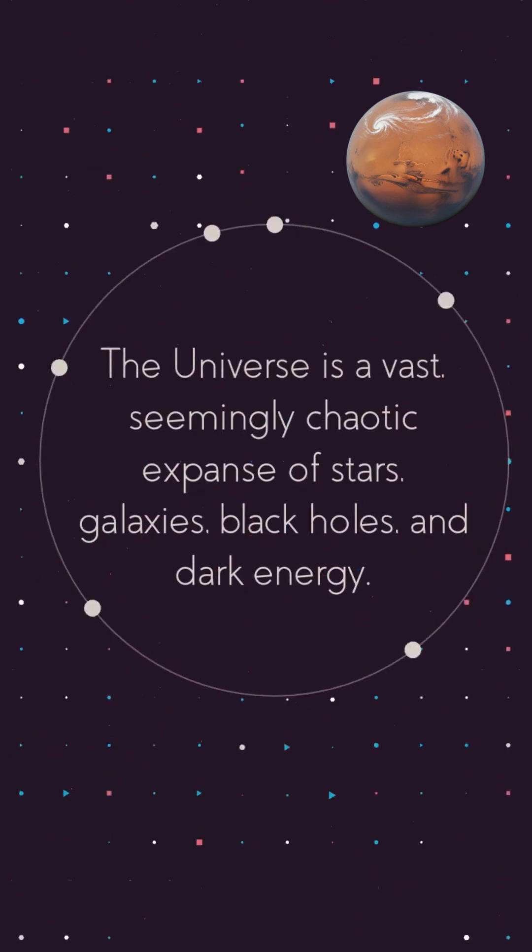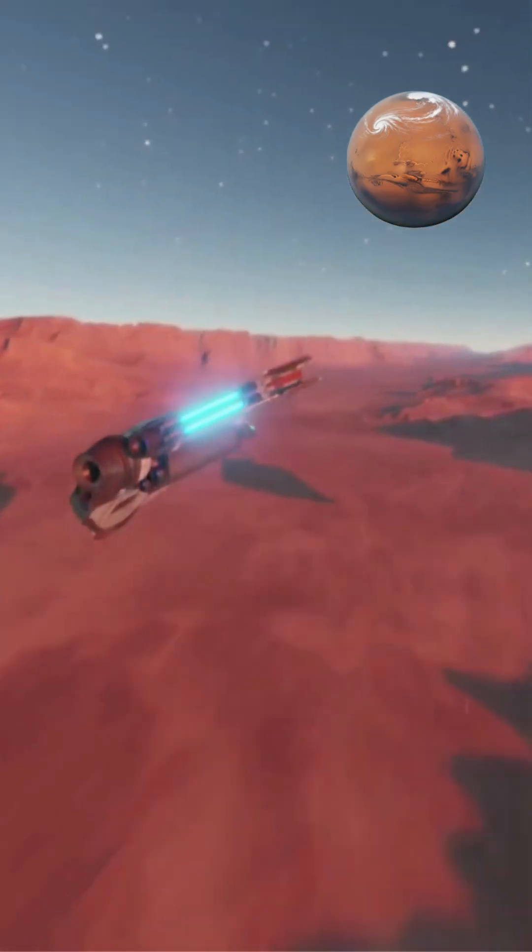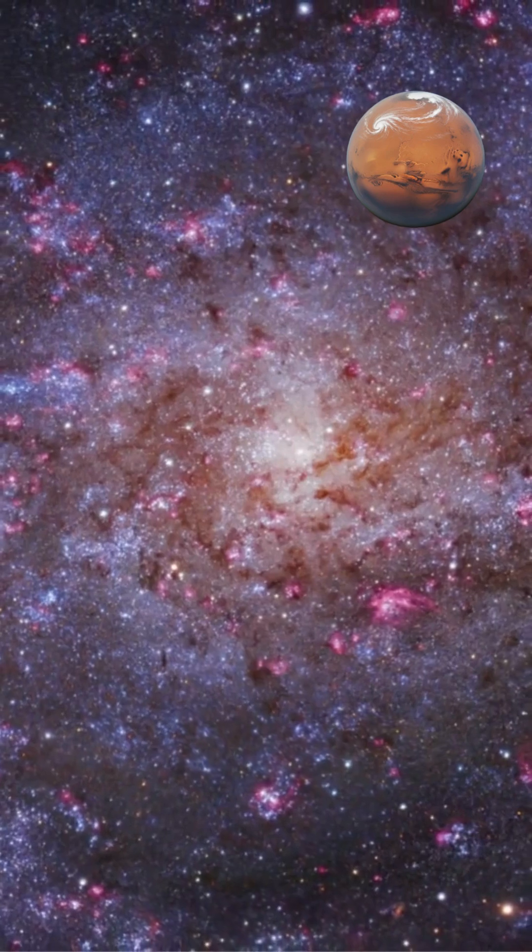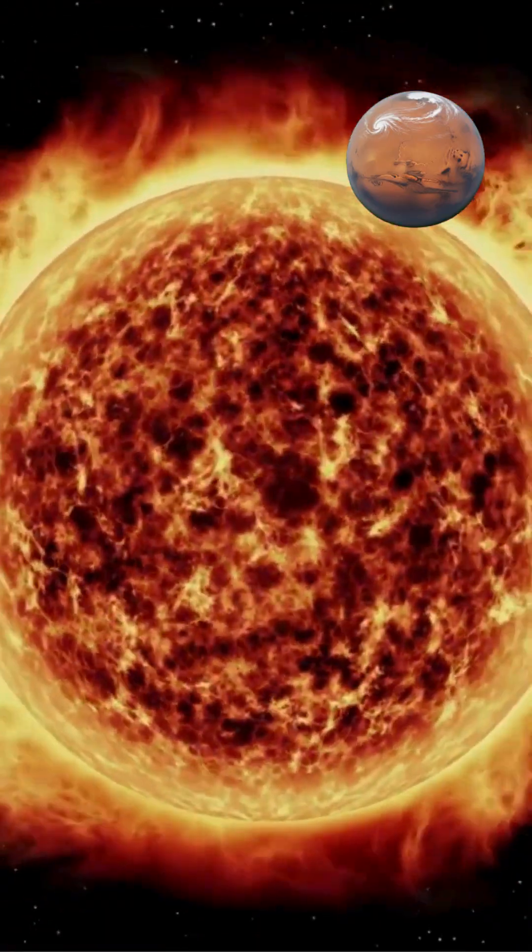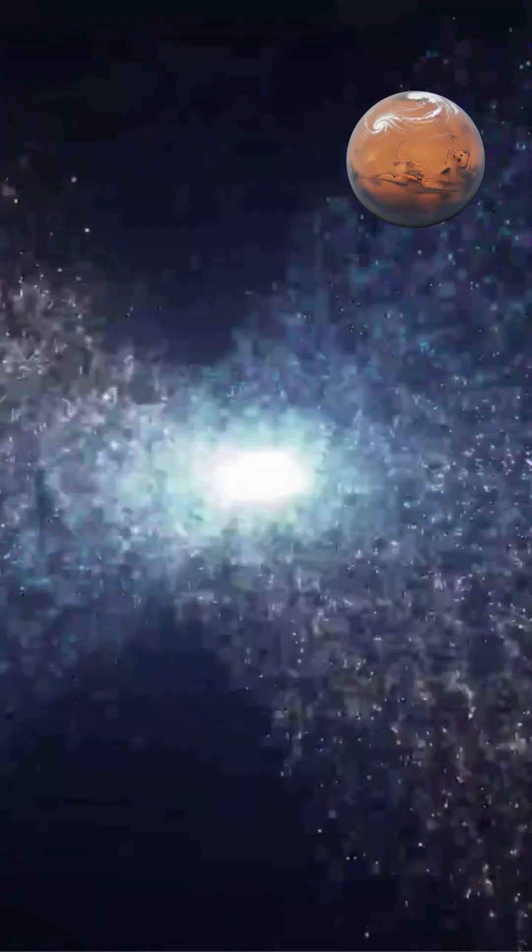The universe is a vast, seemingly chaotic expanse of stars, galaxies, black holes, and dark energy. Yet, despite its complexity and scale, it remains remarkably stable. Galaxies spin without flying apart, planets orbit their stars predictably, and large-scale structures evolve over billions of years without total collapse.